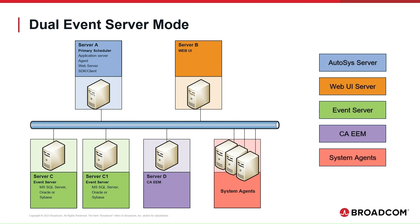Dual Event Server Mode: You can configure an Autosys Workload Automation instance to run using two event servers, or databases — this configuration is named Dual Event Server Mode. The Dual Event Server Mode provides high availability for the database by running two event servers synchronized to maintain identical data, including object definitions and events. Autosys reads from one event server and writes to both simultaneously. If one event server is lost due to hardware, software, or network problems, operations can continue on the second event server without losing data or functionality. This feature is independent of any database replication or redundancy.